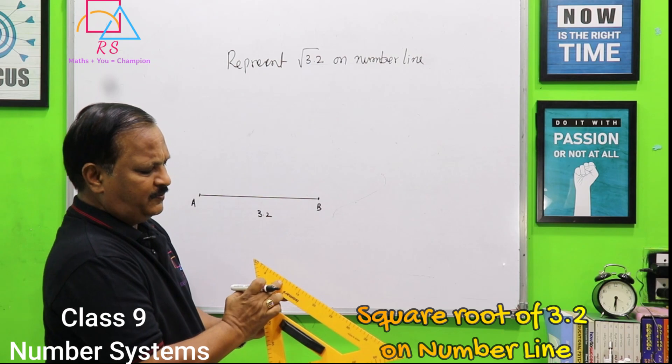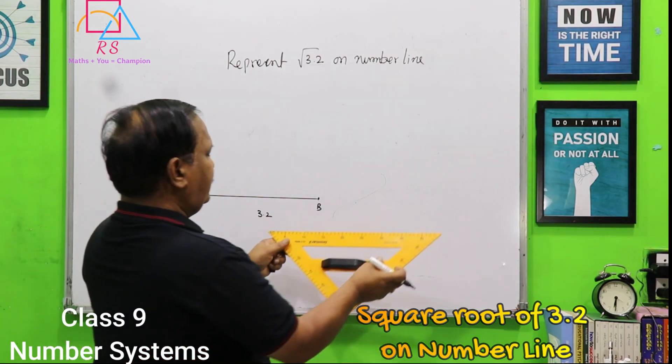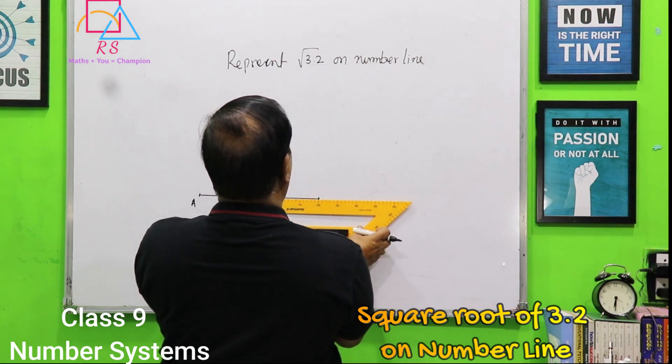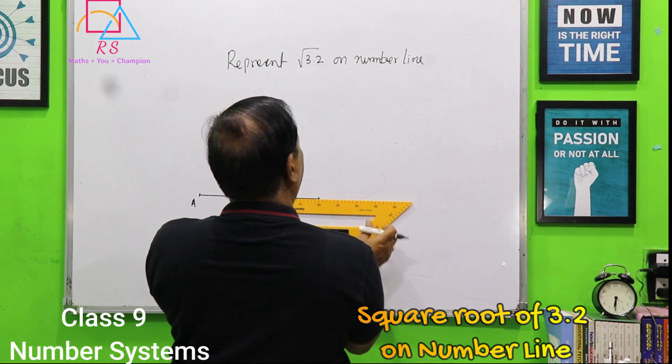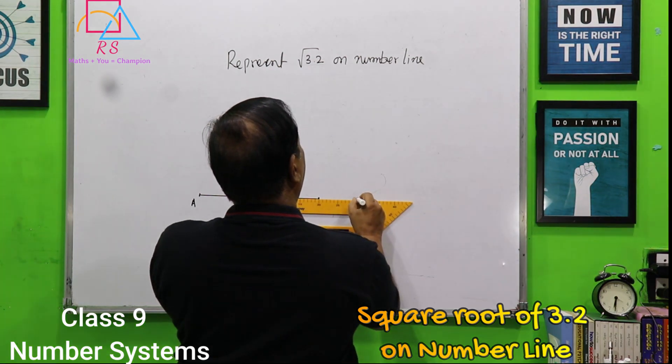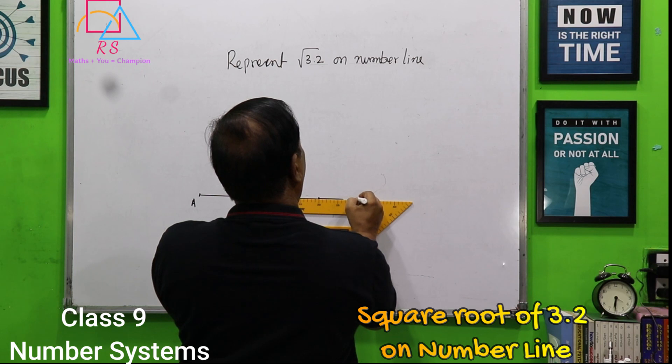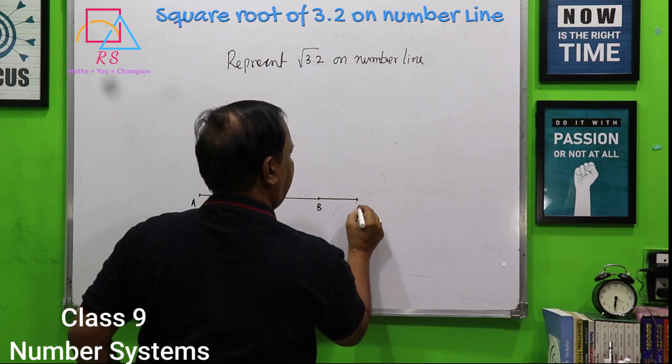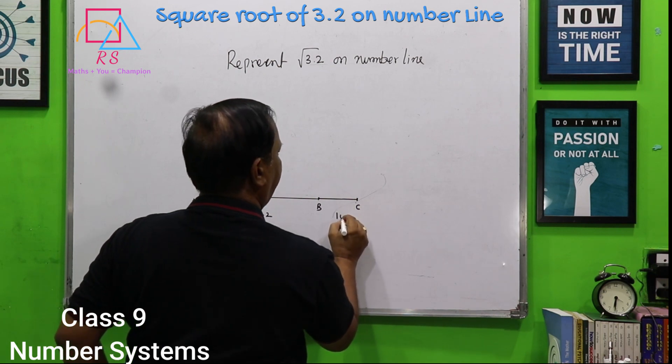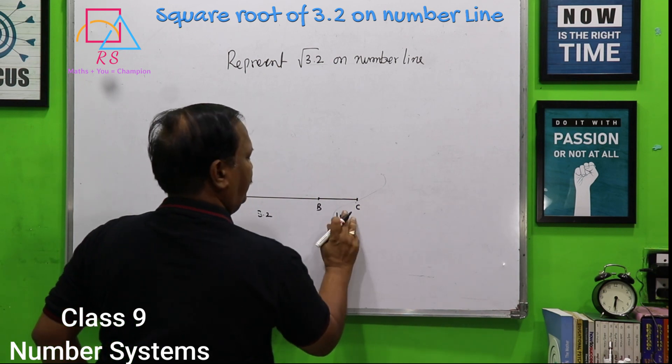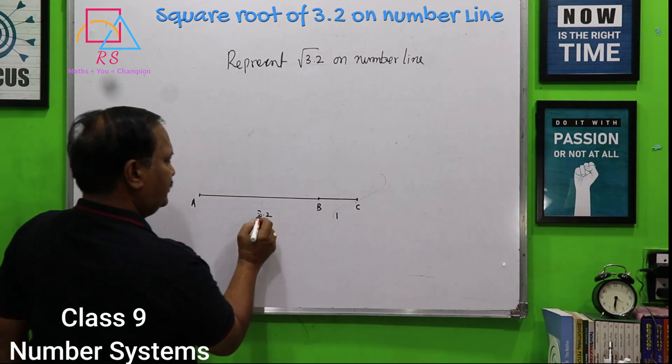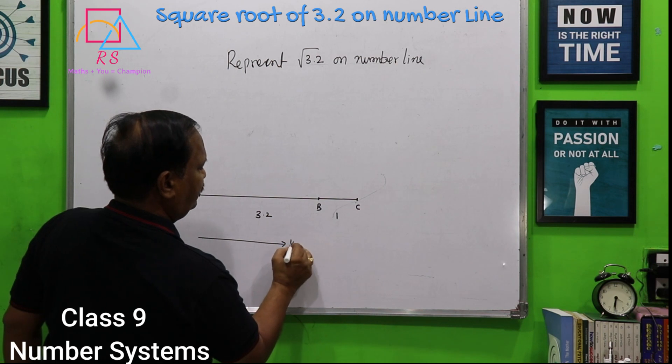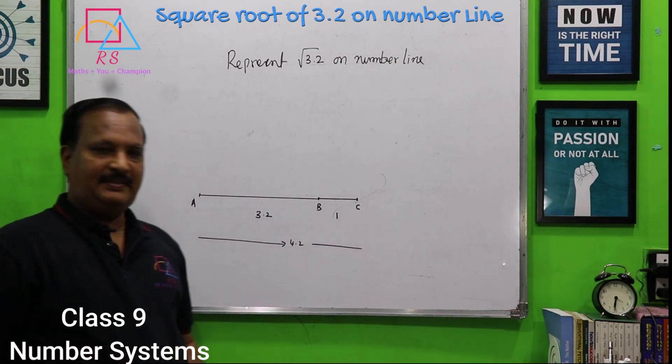So, what I will do? I will extend this for one more unit. This is one more unit, this is one unit. So, this is 3.2 and total is how much? 4.2.